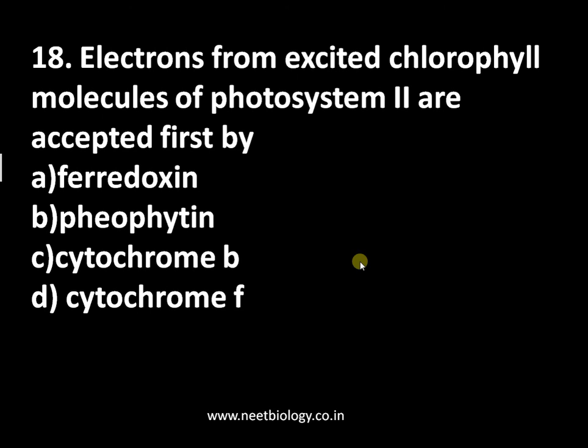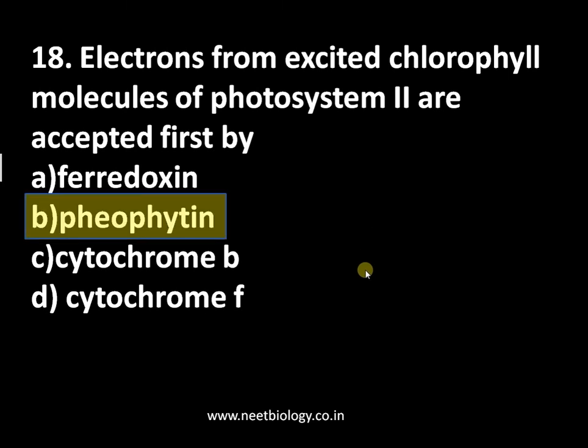Question number eighteen: electrons from excited chlorophyll molecules of photosystem II are accepted first by — option A: ferredoxin, option B: pheophytin, option C: cytochrome b, option D: cytochrome f. The answer is pheophytin, the primary electron acceptor in non-cyclic photophosphorylation. Cytochrome b and cytochrome f are proton channels, and ferredoxin is involved in NADPH synthesis in association with ferredoxin reductase.